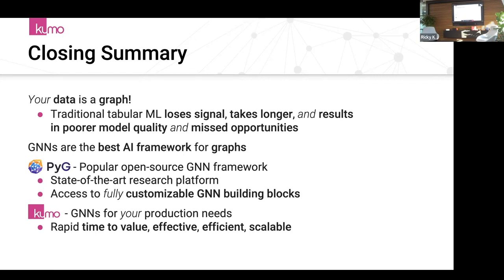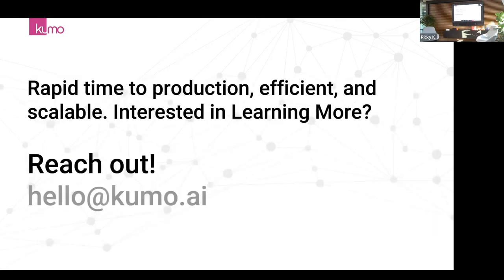PyG is by far the world's most popular GNN library, especially popular in academia and research. If you want to go deep into GNNs, PyG is the library of choice—so beautiful, extensible, and playable. Kumo, on the other hand, is a production-based platform that brings the power of GNNs to your graph workloads or more generally to your relational data. Kumo takes care of taking your raw data, building the graphs, building the training data, training your models, and giving you predictions—all end-to-end, no feature engineering, no graph management. This means you can very rapidly iterate and get value out of predictive models. Please reach out if you are interested.